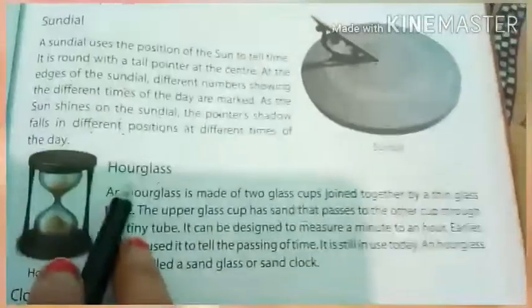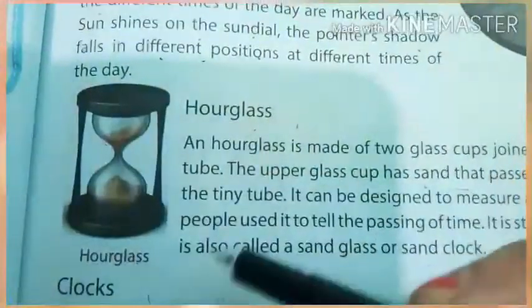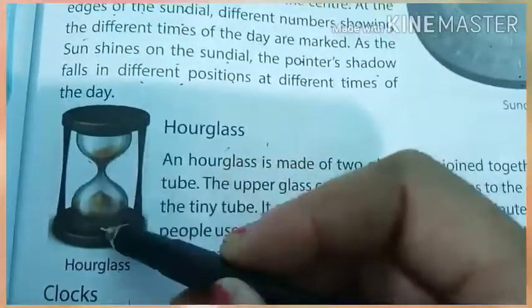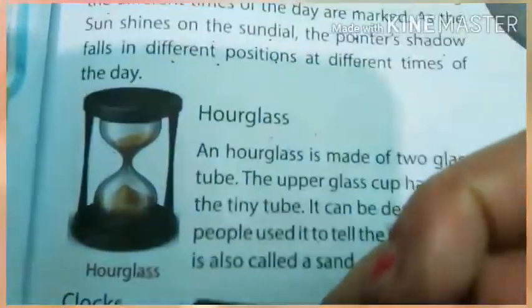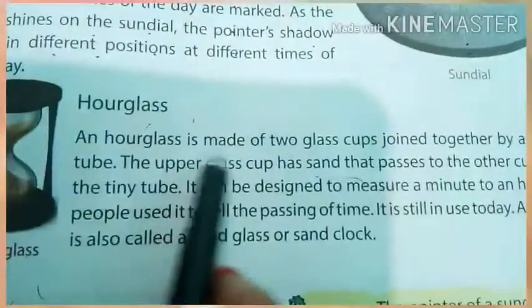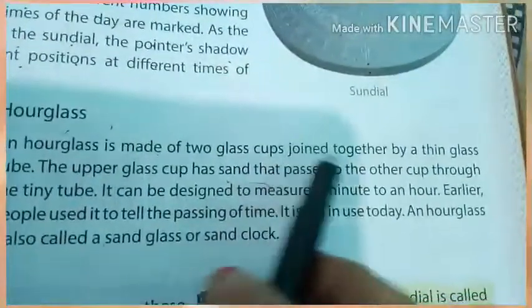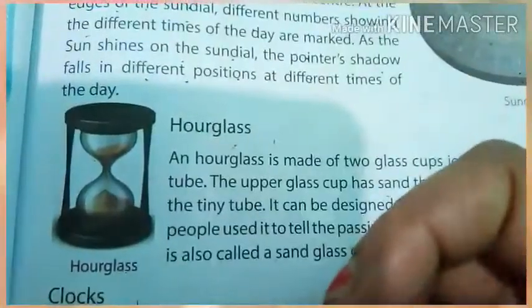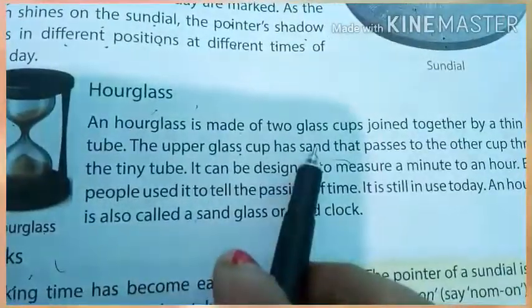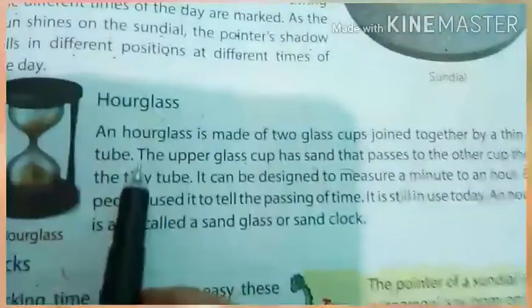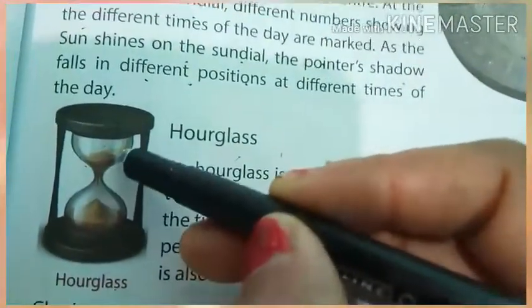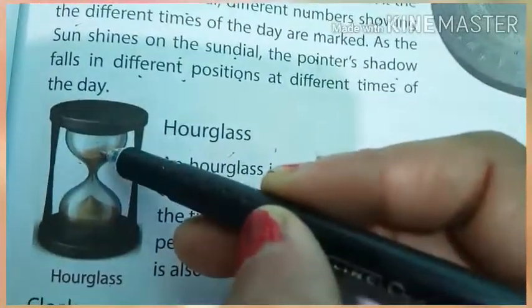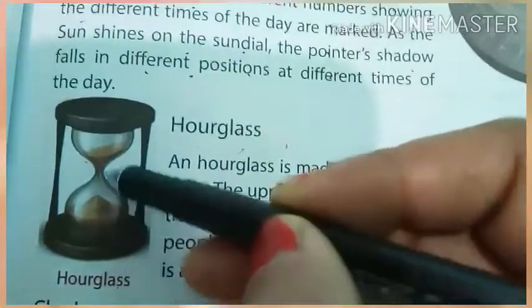Next is our hourglass. See, this is the image of the hourglass. It contains sand inside it. An hourglass is made of two glass cups joined together by a thin glass tube. These are the two glasses which are joined together. The upper glass cup has sand that passes to the other cup through the tiny tube. In the upper glass there is sand and slowly the sand passes from the upper glass to the lower glass through a tiny tube.